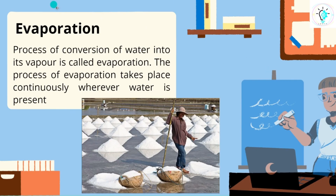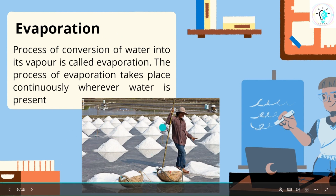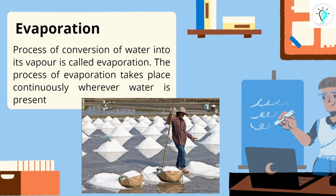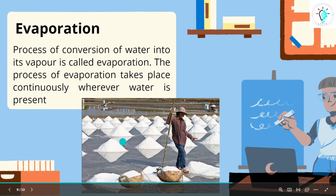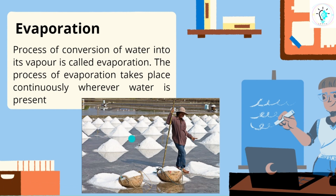Let us talk about the very important process called evaporation. Evaporation is the process of conversion of water into its vapour. This evaporation technique takes place continuously wherever water is present. It is one of the most common techniques used in the separation of salt from water in sea beds. When water from the sea is evaporated, heaps of salt become visible for separation.